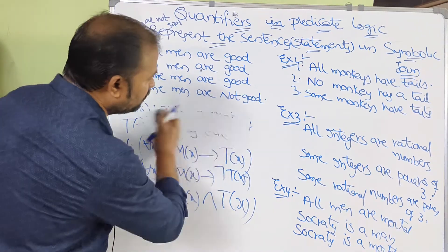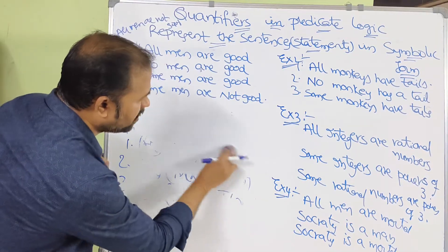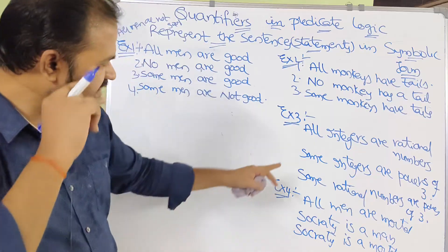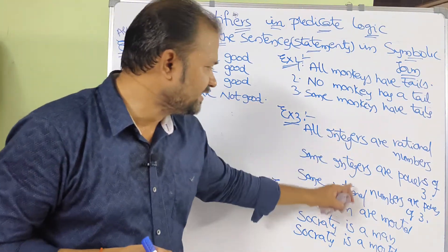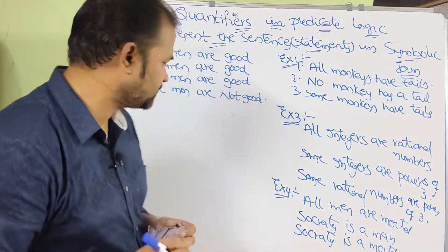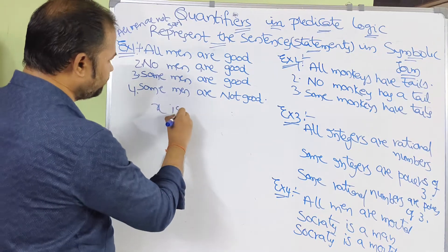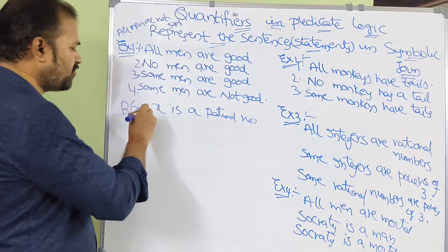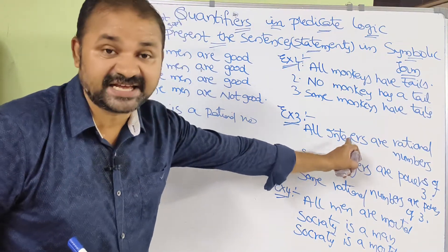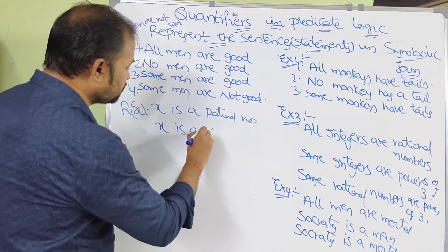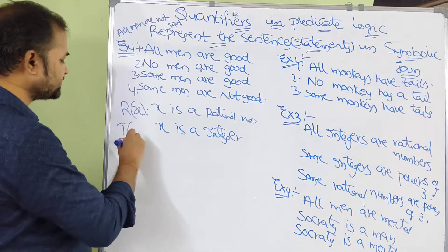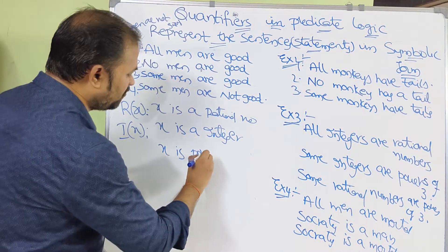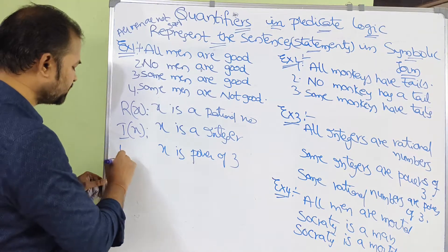Now let us see the third example, which also has three statements: All integers are rational numbers. Some integers are powers of 3. Some rational numbers are powers of 3. The words all and some are quantifier words. Integers, rational numbers, and powers of 3 are predicates. For 'X is a rational number', starting with R, the function is R(x). For 'X is an integer', starting with I, it is I(x). For 'X is a power of 3', starting with P, it is P(x).